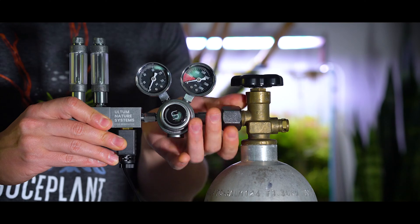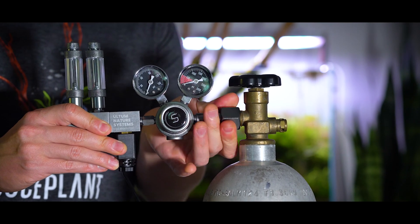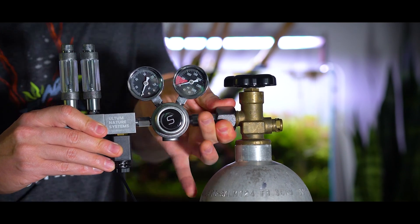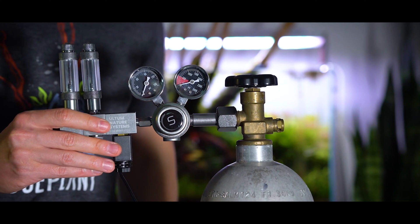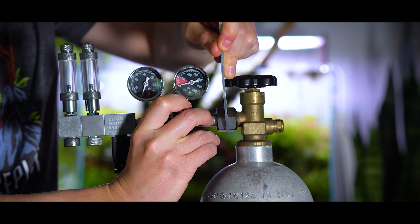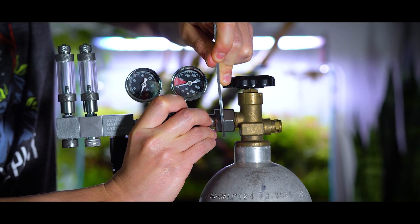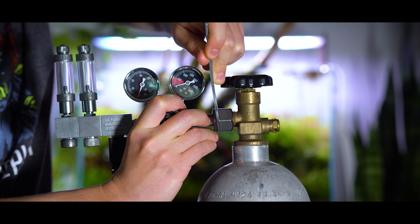Step two, we're going to add the regulator onto the CO2 cylinder. For the first part, we're just going to finger tighten the nut on the regulator onto this part of the CO2 cylinder, and then next up we're going to make sure it's on there really tight and secure with the wrench. This wrench is included with the UNS regulator.